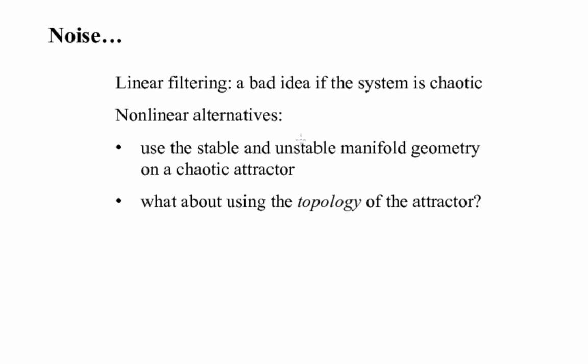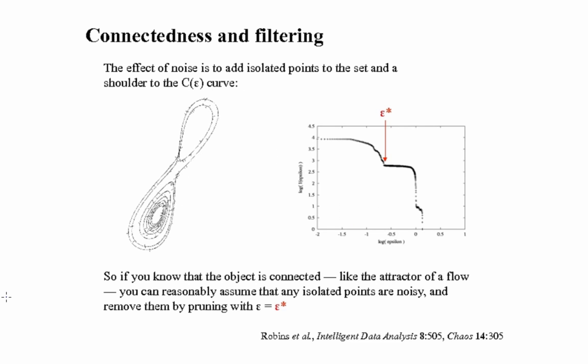There are other properties of chaotic attractors that we can also use to reduce noise, like the topology. I'm not going to talk about this in any depth, but the basic idea here is that chaotic attractors are connected. And connected sets don't have any isolated points. Therefore, if you find isolated points in your trajectory, using what are called computational topology techniques, those are probably noise effects and can safely be thrown away. There's a reference here at the bottom of the slide, if you're interested, and you can get that paper off my webpage.